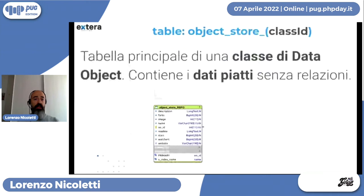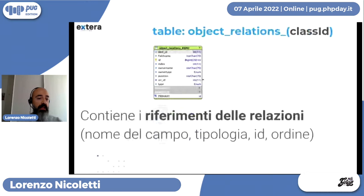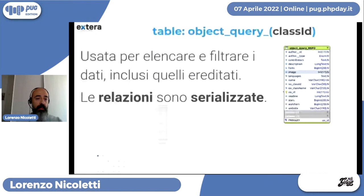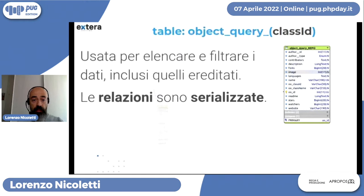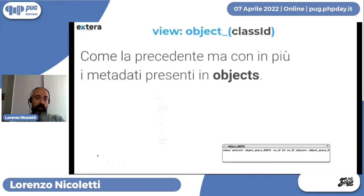La classe object_store è dove vengono salvati i dati piatti, senza relazioni. C'è poi la tabella delle relazioni, con ID e tipologie. La tabella object_query serve per le ricerche: Pimcore la utilizza per gli elenchi e i filtri, con le relazioni denormalizzate serializzate come long text. Infine c'è una vista che fa join con la tabella degli object per avere anche i metadati: quando è stato modificato un oggetto, chi è il proprietario, dove si trova nell'albero degli oggetti.